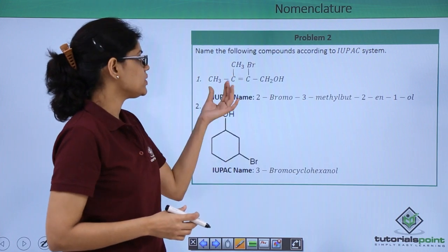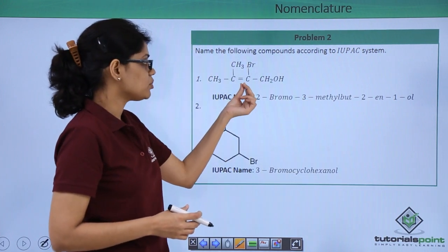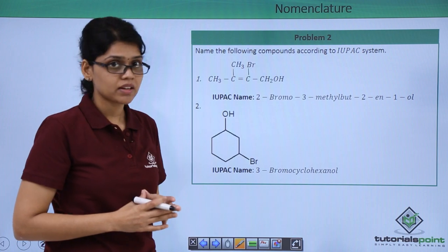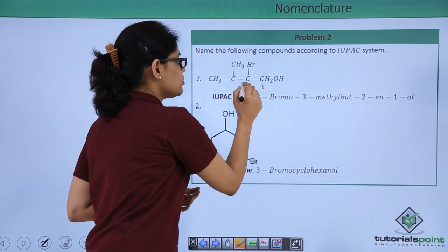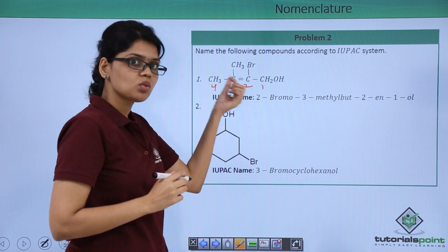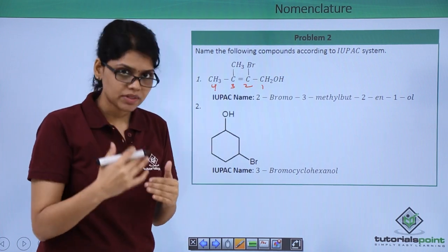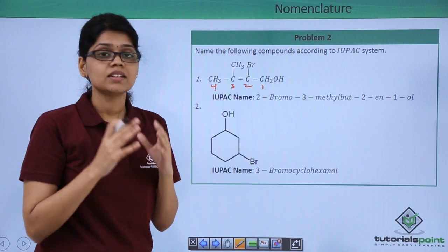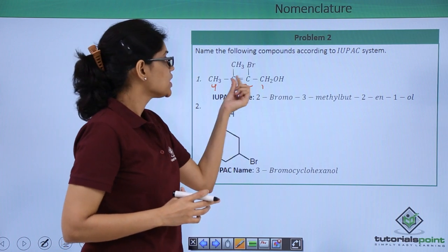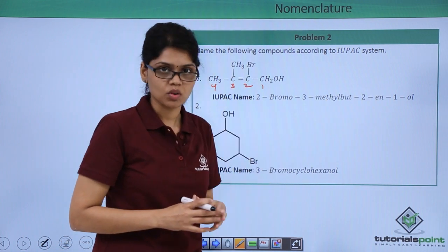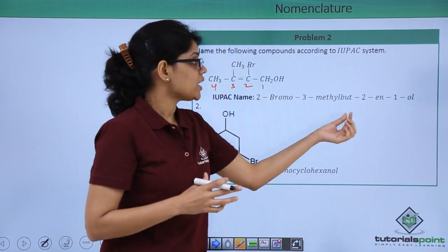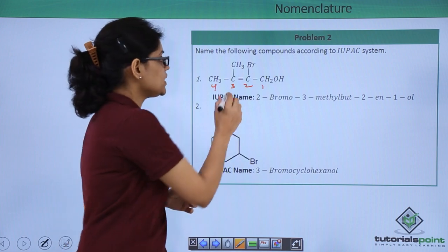For the next structure, CH3-C(CH3)=CBr-CH2OH, writing the numbering gives substitution at C2 and C3. Writing the substituents in alphabetical order, the IUPAC name is 2-bromo-3-methyl-but-2-en-1-ol, where 1 corresponds to the position of the hydroxy group and 2 corresponds to the position of the double bond.